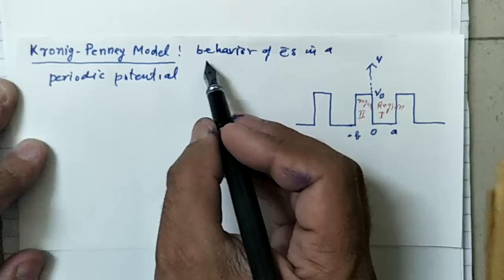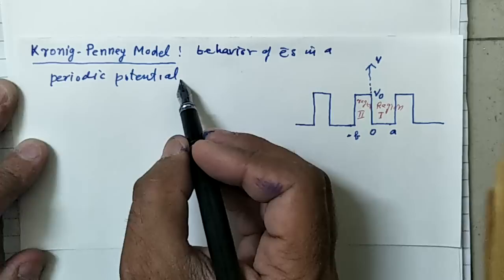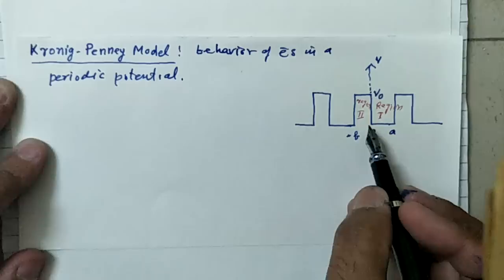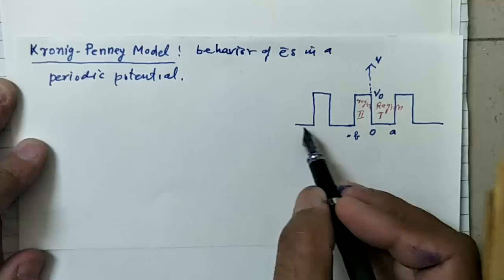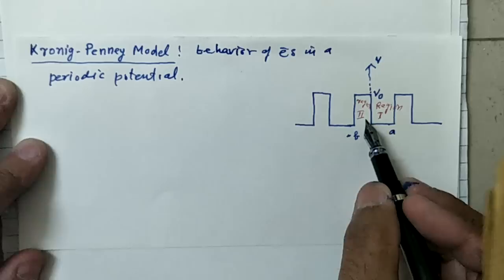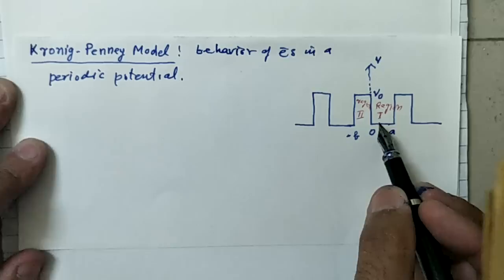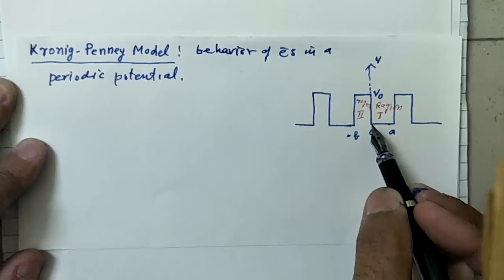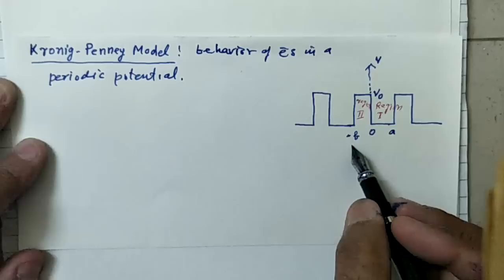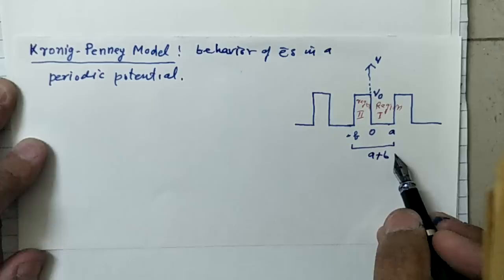In this video we will discuss the Kronig-Penney model. This model discusses the behavior of the electron in a periodic potential. Here we will assume a one-dimensional model of a periodic potential, as represented in this figure. It represents the potential energy of an electron in a linear array of positive ions, assumed to have the form of a periodic array of square wells with a period of a plus b.